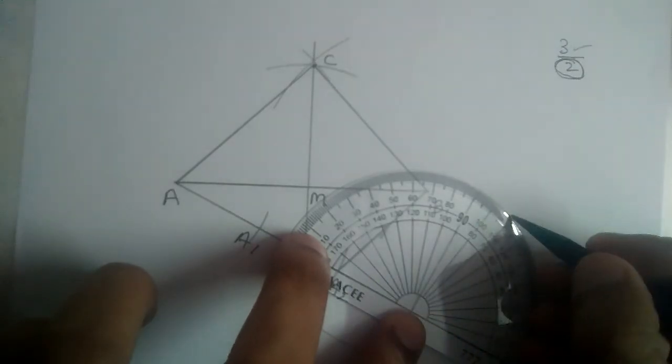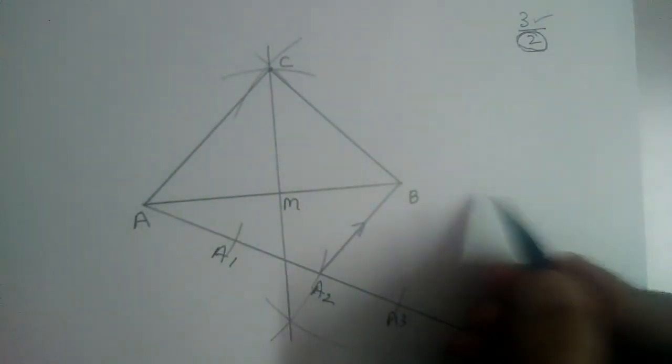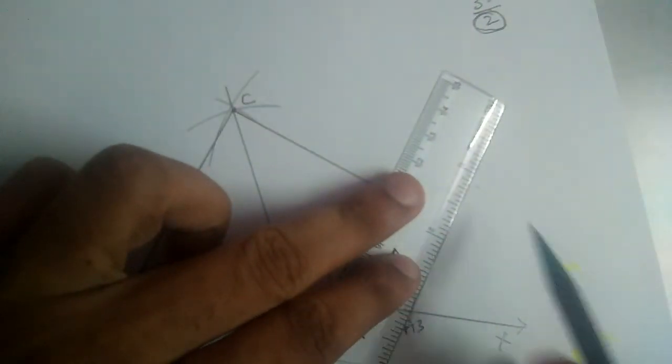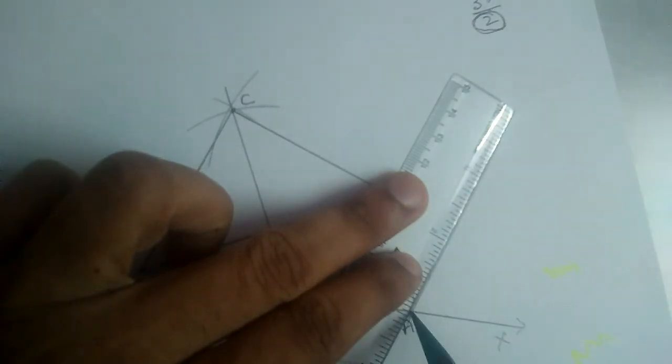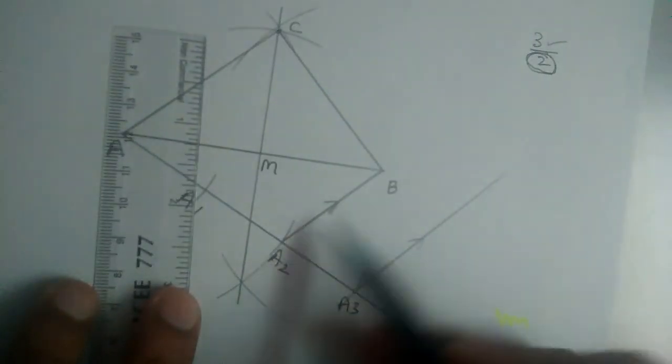So from A3 also we should mark an angle 71. So this is 71. I hope you are able to see this is the point. Now let us join A3 with the point and extend that. So this line is parallel to BA2.